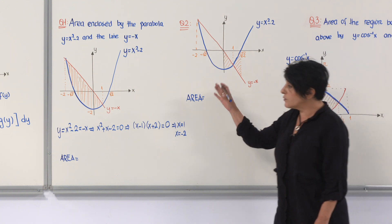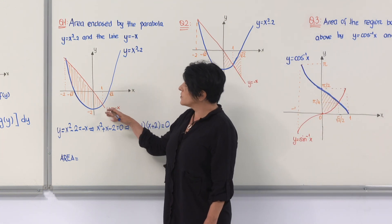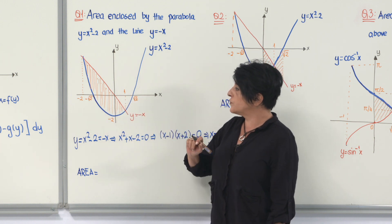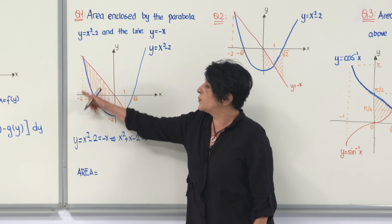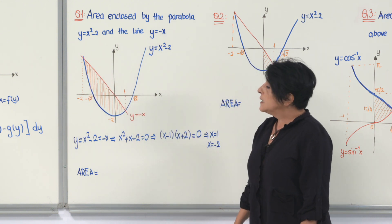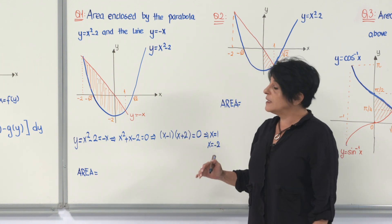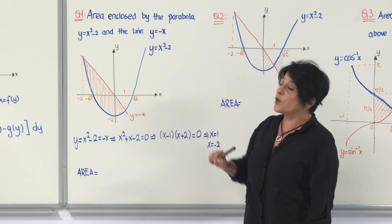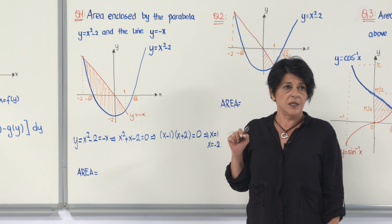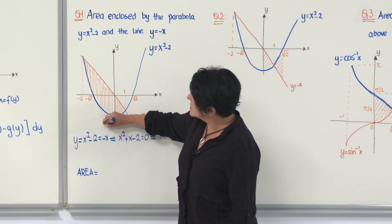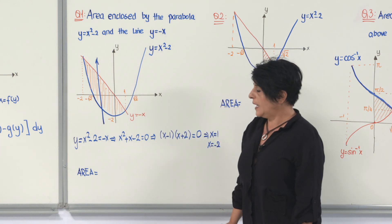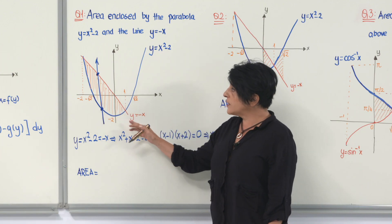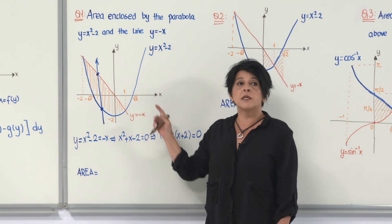Now we have found the intersection points. Looking at the graph, the parabola opens upward, intersects the y-axis at −2, and the x-axis at ±√2. The line intersects the parabola at x = −2 and x = 1. To determine which curve is bigger, I draw an arrow parallel to the y-axis passing through the shaded region. This arrow leaves the shaded region on the line and enters on the parabola, which means the line is bigger than the parabola.